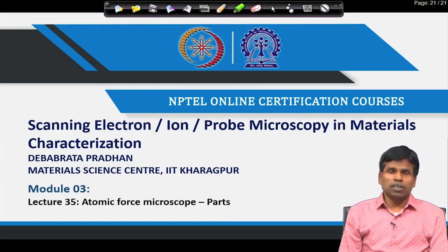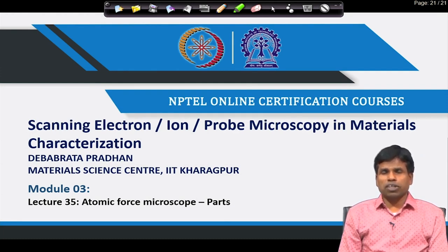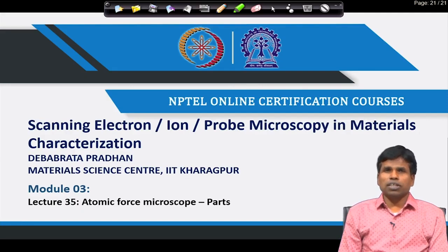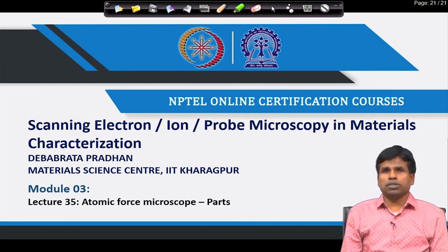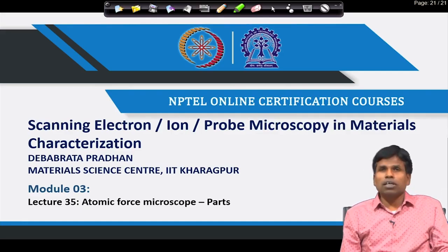Welcome back. In the last two lectures we began discussing Atomic Force Microscopes. I introduced the AFM as a tool to get the topology of the sample surface through force measurements, and discussed the Lennard-Jones potential curve — the attractive and repulsive forces between the tip and sample — where a physical probe is scanned over the surface to measure the force and get a 3D image.